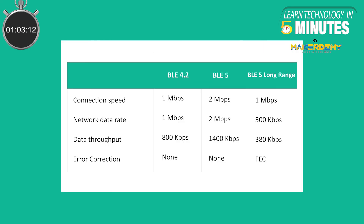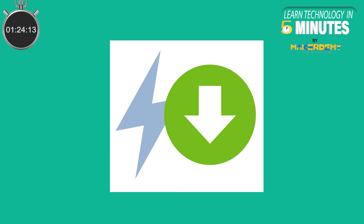First, let's look at the speed improvement. In older versions of Bluetooth, the data rate for BLE was set at a fixed 1 Mbps. In Bluetooth 5.0, a new mode with a data rate of 2 Mbps is introduced. This new data rate offers a couple of additional benefits as well: reduced power consumption, since the same amount of data is transmitted in less time.